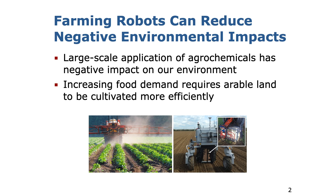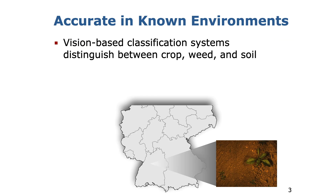In conventional farming, tractors apply large amounts of agrochemicals uniformly across the oil field, which has a negative impact on the environment. However, in times of increasing food demand and global climate change, the present arable land has to be cultivated more efficiently. Farming robots have the potential to reduce those negative impacts by targeted treatment through actuators like selective sprayers, lasers or mechanical tools. On this image you can see how the robot percepts the field. Vision-based classification systems form the basis for such weed control interventions.